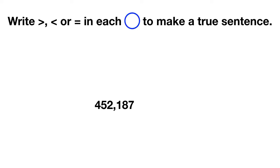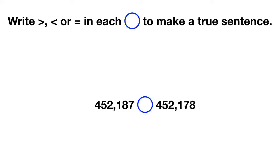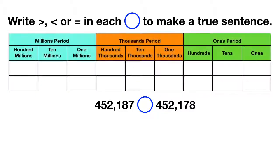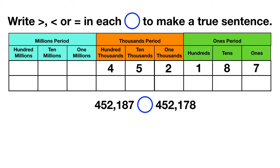You have the number 452,187, and you're comparing it to the number 452,178. It helps to start with a place value chart. We can take our first number and put it on top, starting with the ones place. Then we take our second number and put it below, also starting with the ones place.